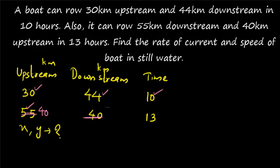So you are asked to find X and Y. The upstream speed and downstream speed can be found using a shortcut formula. I'll write upstream speed as USS and downstream speed as DSS, just for convenience.